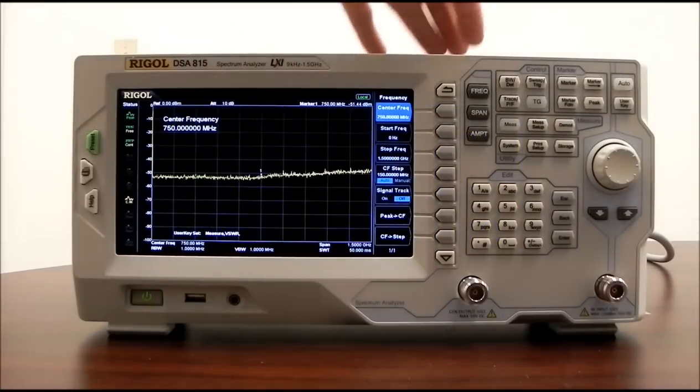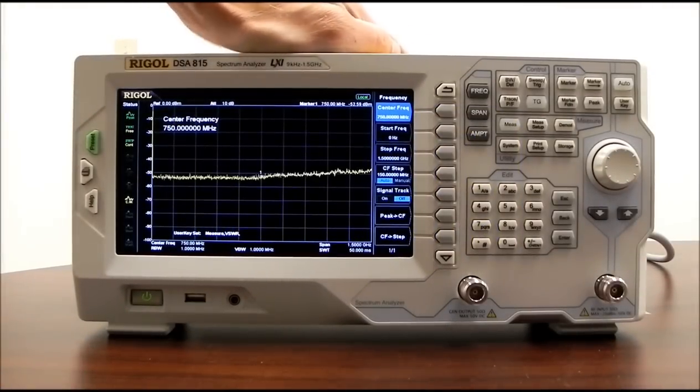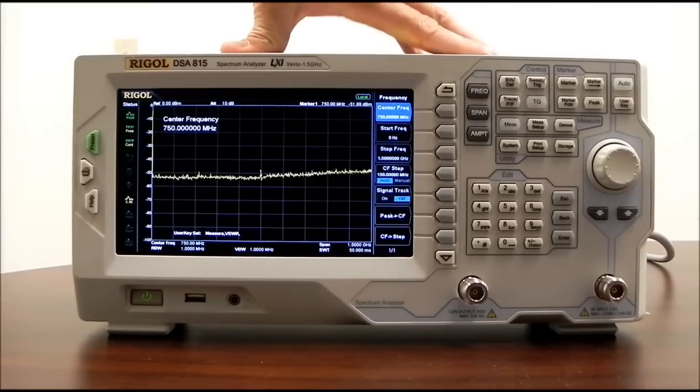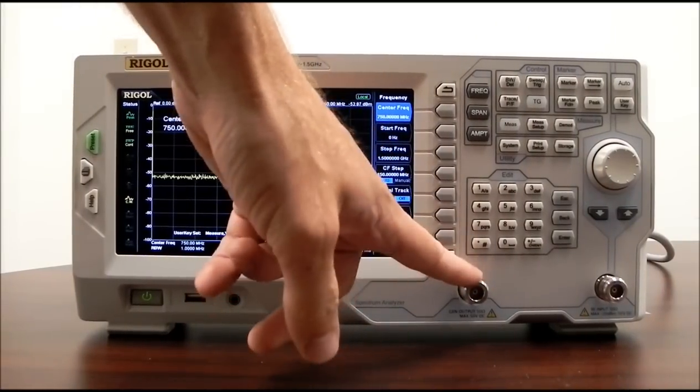And now I'd like to cover the tracking generator. The tracking generator is an option available for the DSA 815 at the time of purchase. It's a factory installed option. You can see that this particular 815 has tracking generator output.